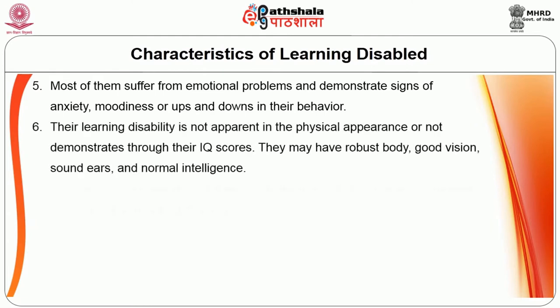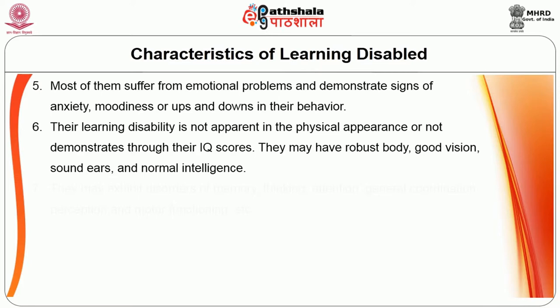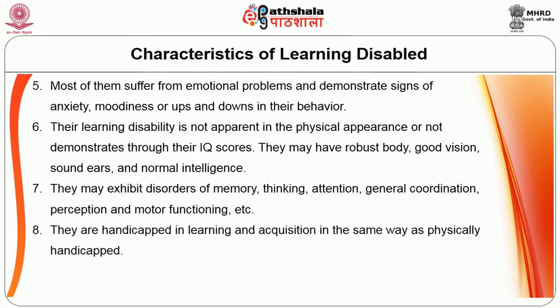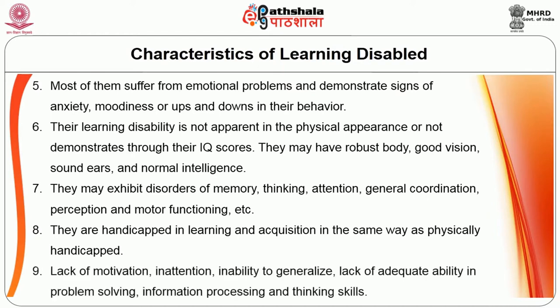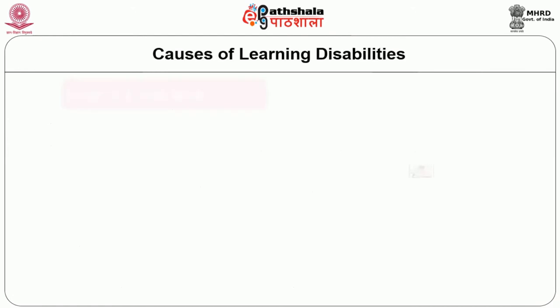Their learning disability is not apparent in physical appearance and not demonstrated through IQ scores — they may have a robust body, good vision, sound hearing and normal intelligence. They may exhibit disorders of memory, thinking, attention, general coordination, perception and motor functioning. They are handicapped in learning and acquisition in the same way as physically handicapped individuals. Other characteristics include lack of motivation, inattention, inability to generalize, and poor ability in problem solving, information processing and thinking skills.